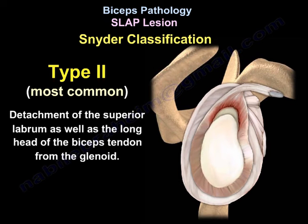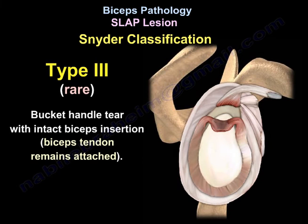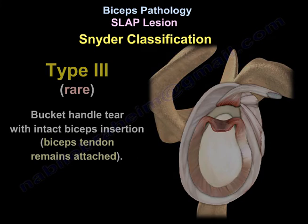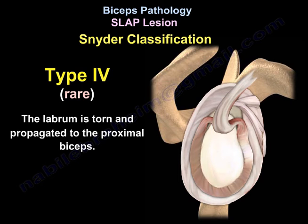Type 2 is characterized by a detachment of the superior labrum as well as the long head of the biceps from the glenoid. Type 3 has a bucket-handle tear, but the biceps root remains attached. Type 4 involves the labrum being torn and propagated into the proximal biceps.